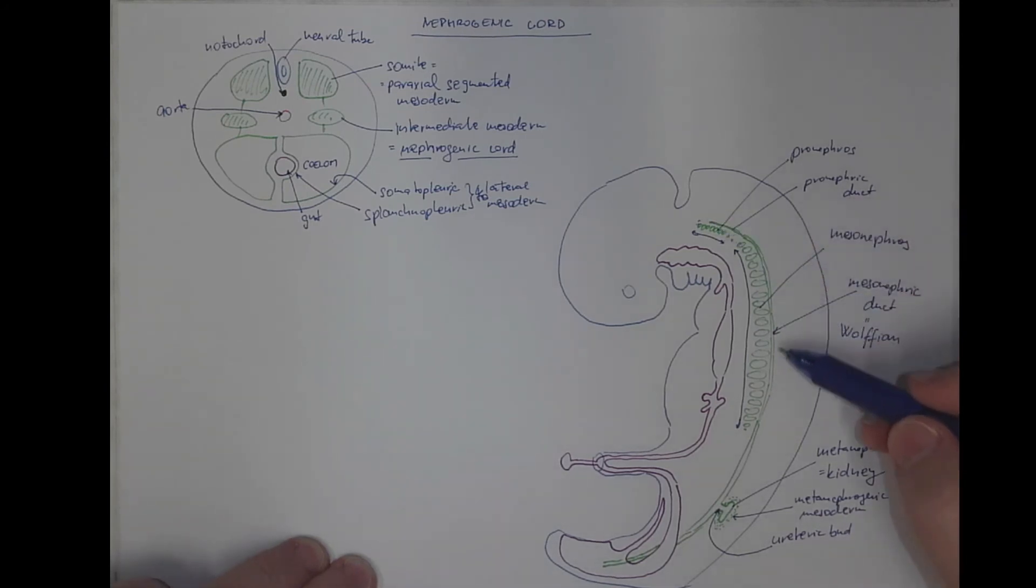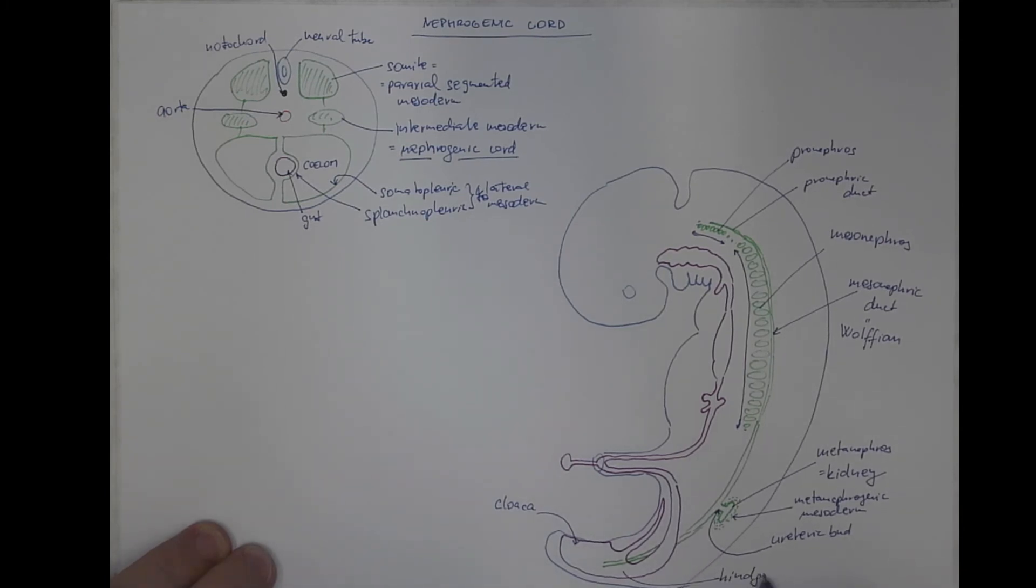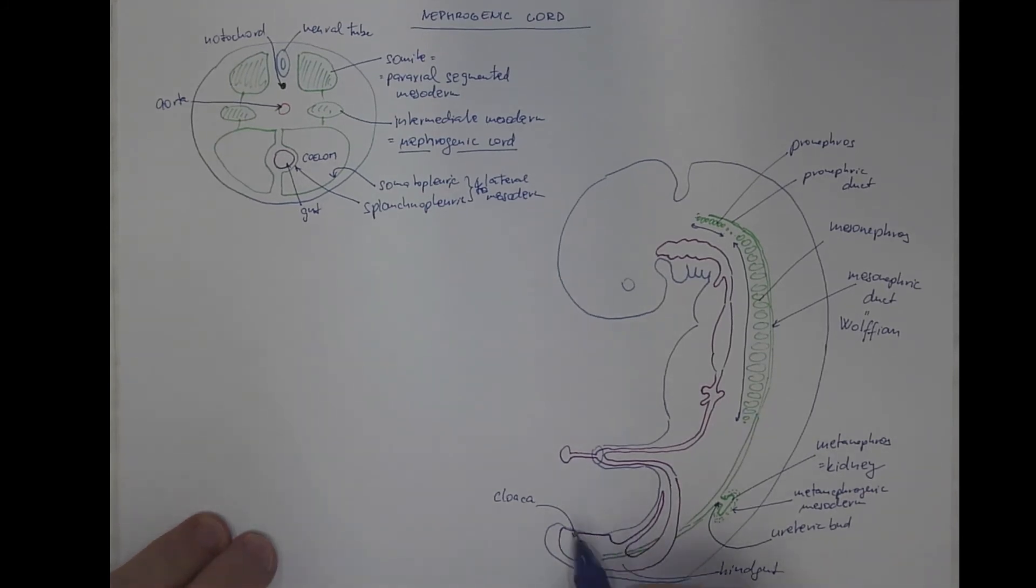So all the green structures come from the mesoderm. This is the cloaca, terminal part of the hindgut. And this is a blindly ending allantois.